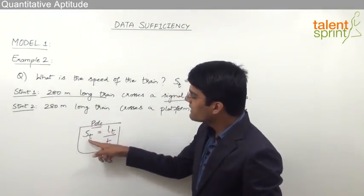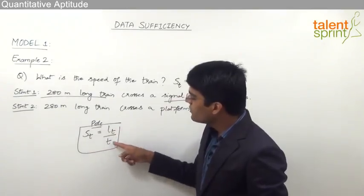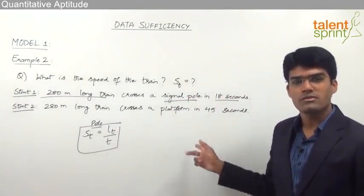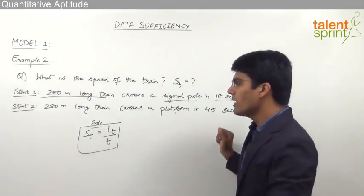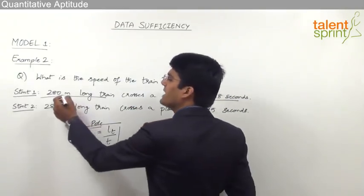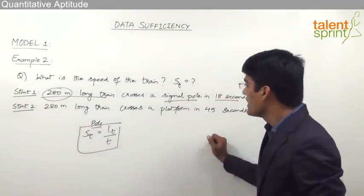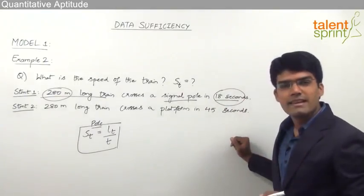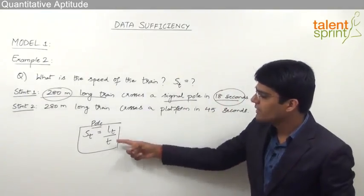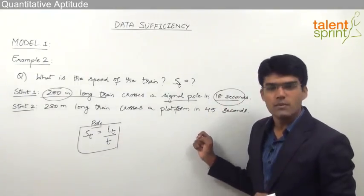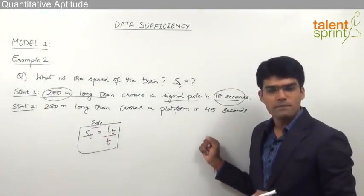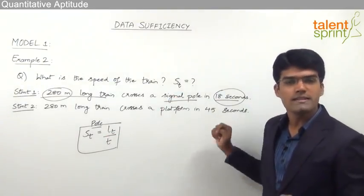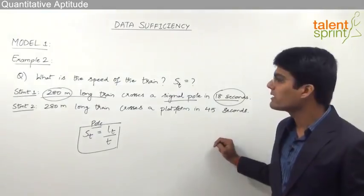To find out the speed of the train, we need to know the length of the train and the time taken to cross the pole. From Statement 1, the length of the train is 280 meters and the time taken is 18 seconds. Substituting these two values into the equation, we can find the speed of the train.